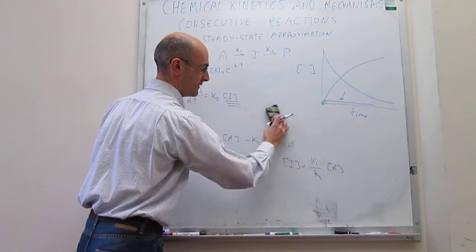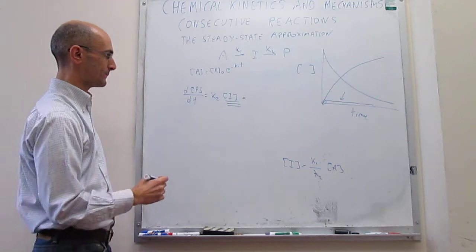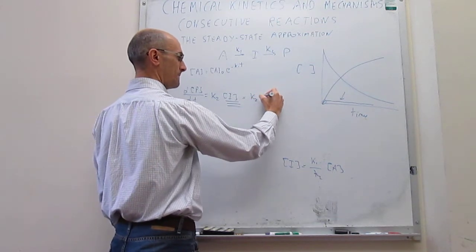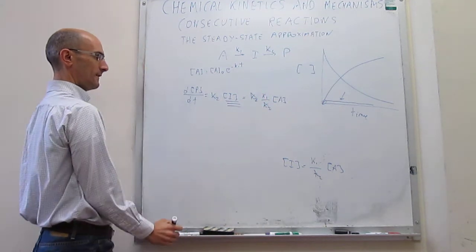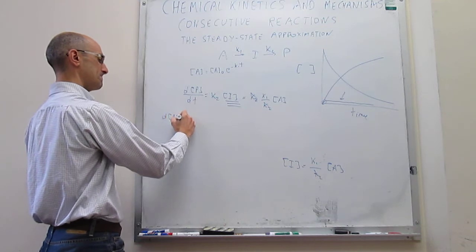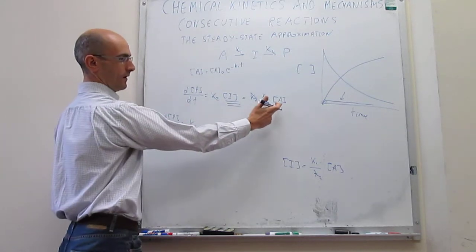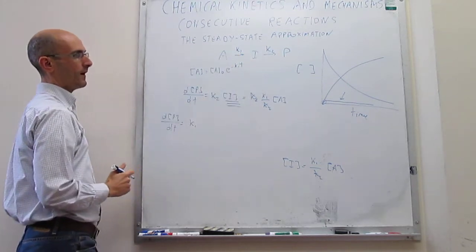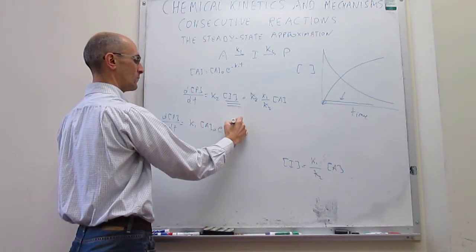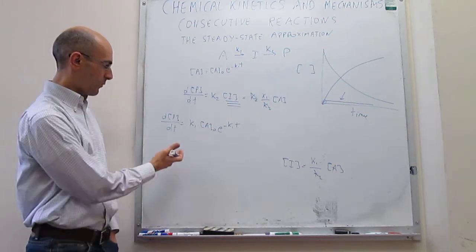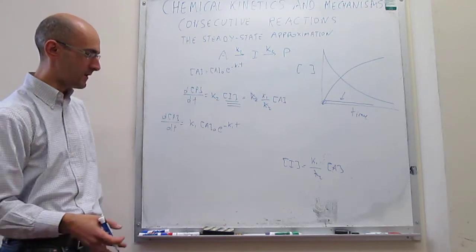Now we can return to the rate law for product formation and substitute in the steady state expression for [I]. We get d[P]/dt = K2 times (K1/K2)[A], and notice that the K2 terms cancel. So d[P]/dt = K1[A]. Since A decays as a first-order exponential, this becomes K1·A0·e^(-K1·t). Notice how we have simplified enormously the mathematical complexity — this is a differential equation that is not too complicated to solve.